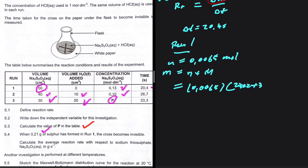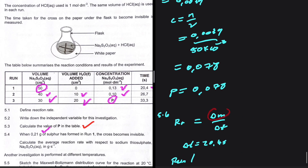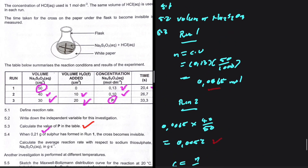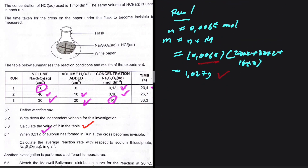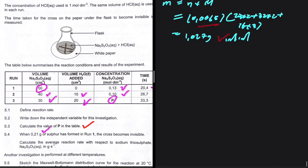Calculating: 23×2 + 32×2 + 16×3. Putting that into the calculator gives an initial mass of 1.027 grams for 0.0065 moles. That is the initial mass of sodium thiosulfate in run one.